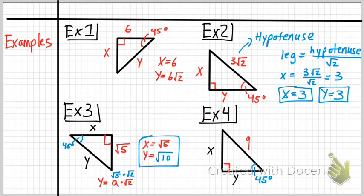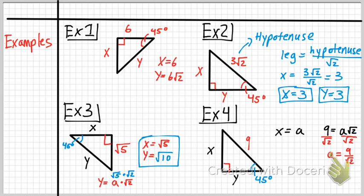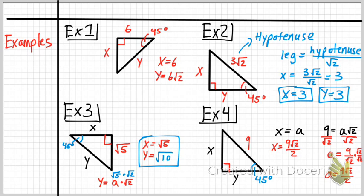For example 4, the hypotenuse is 9, so 9 equals A√2. Dividing both sides by √2 gives A equals 9 divided by √2. We don't like that form, so we rationalize by multiplying top and bottom by √2, giving A equals 9√2 over 2, which can't be simplified further. So x equals 9√2 over 2, and since x and y are the same, y also equals 9√2 over 2.